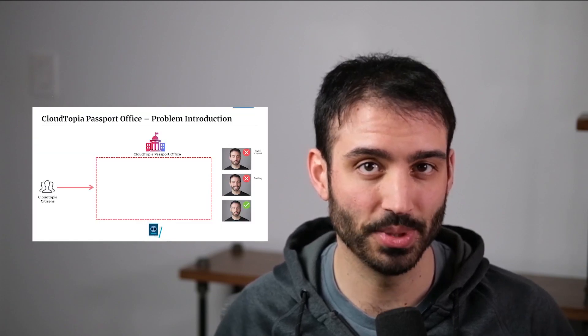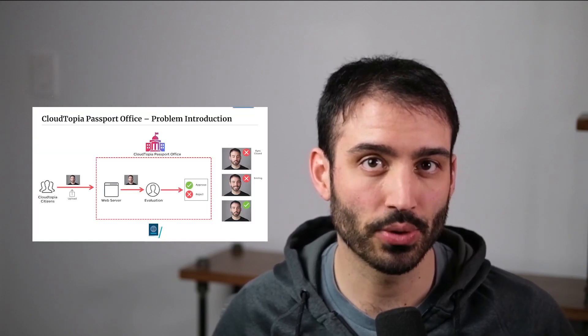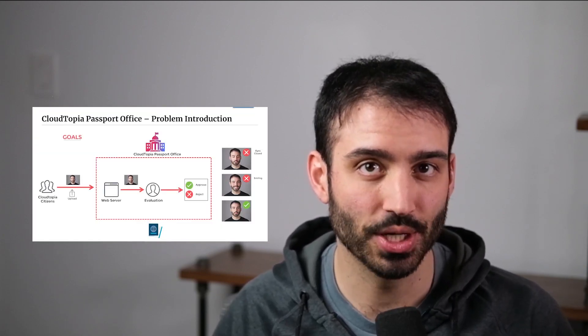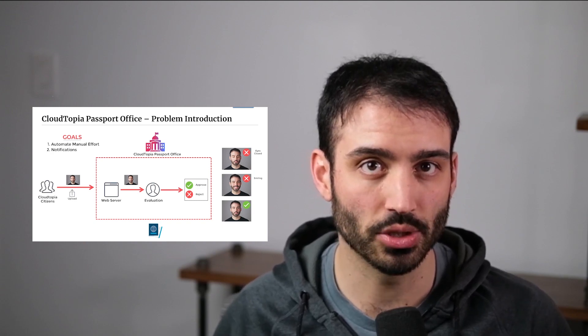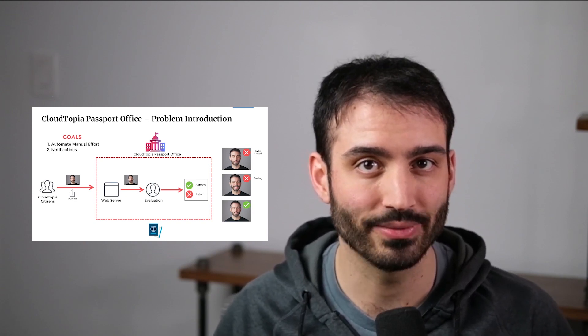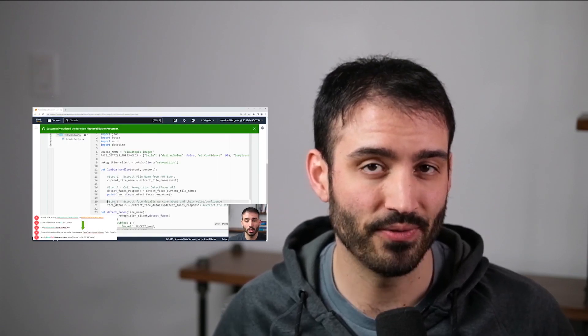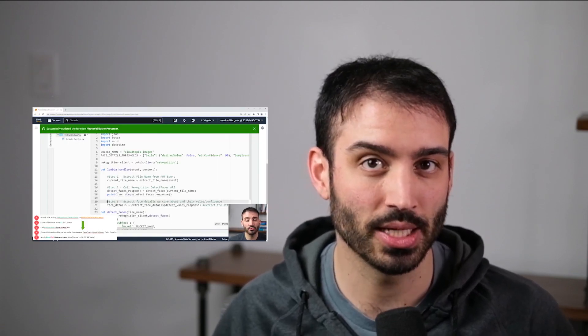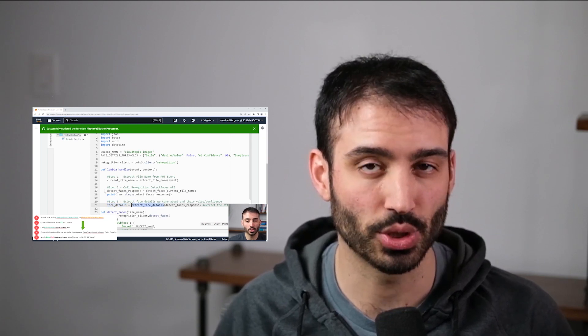This course puts you in the position as a software developer for a government agency. Your task is to develop a serverless application that automates the detection of certain facial features from user submitted photographs. You'll write code that interacts with AWS services that evaluates these images before storing the results for later retrieval.